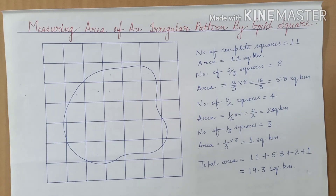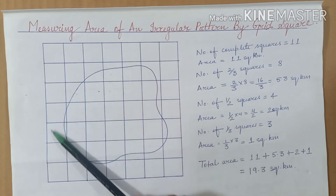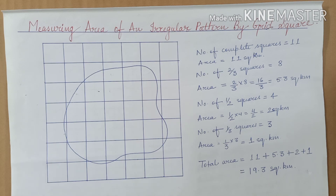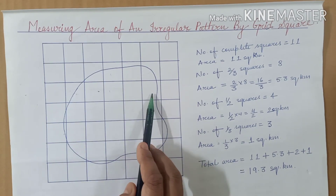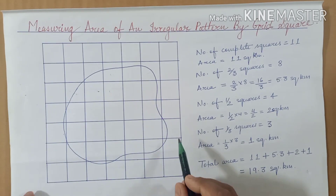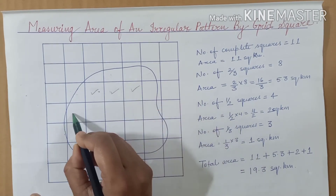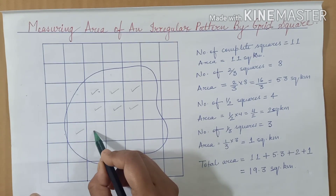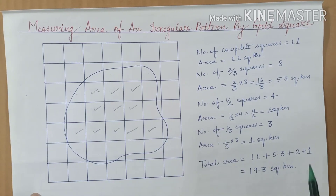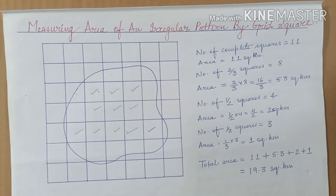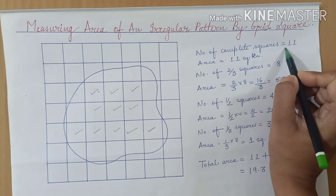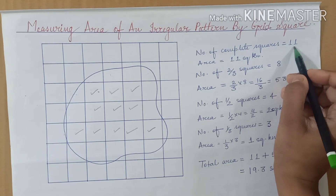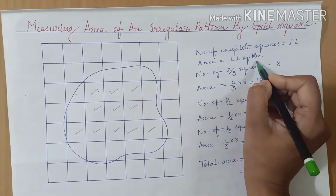We have seen how to calculate the area of a regular pattern. But when we need to calculate the area of an irregular feature on a topographical map extract, the process is: first identify the shape, then find the complete squares. Counting the complete squares gives us 1, 2, 3, 4, 5, 6, 7, 8, 9, 10, 11 — a total of 11 complete squares. Since each grid square equals 1 square kilometer, 11 complete squares gives an area of 11 square kilometers.